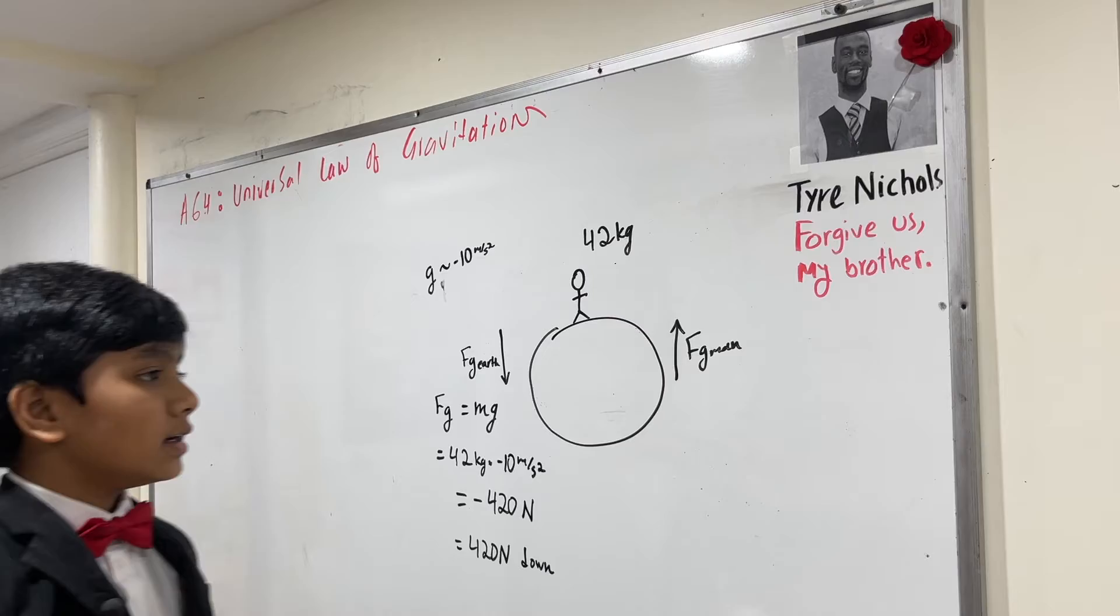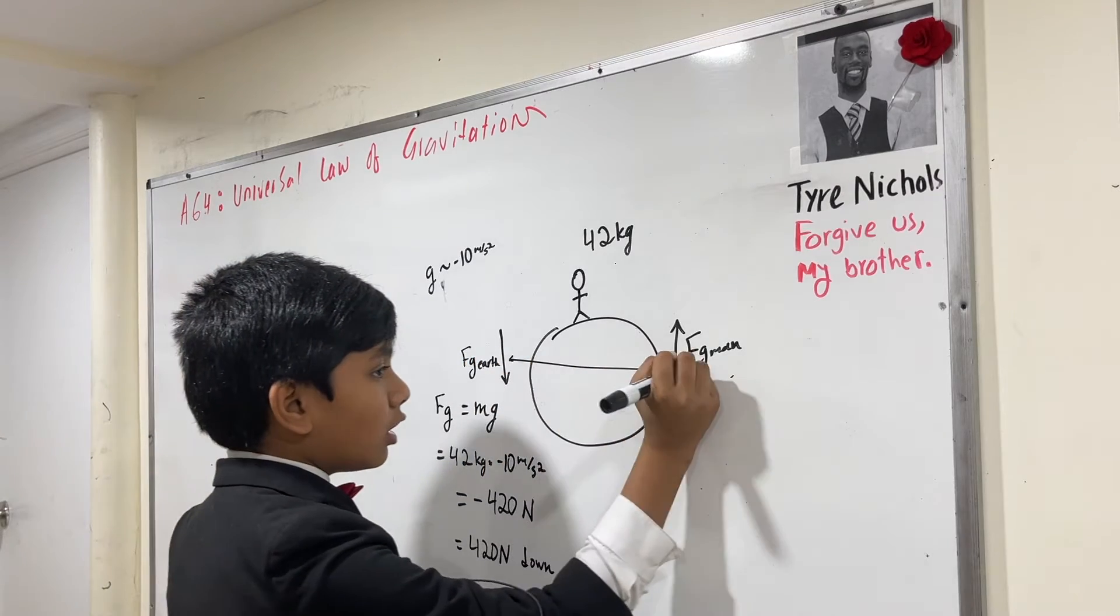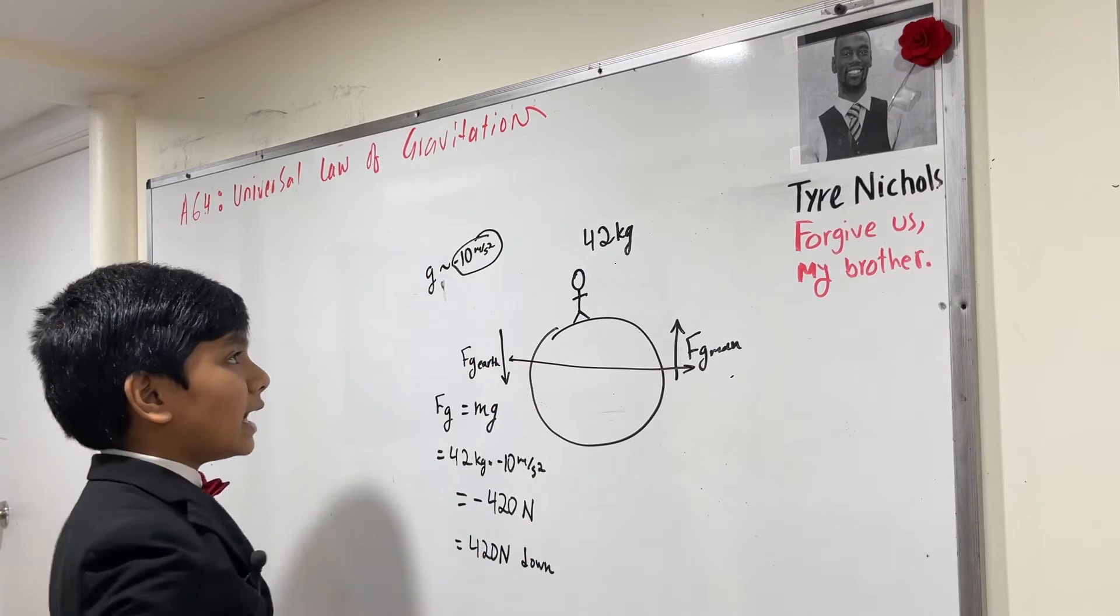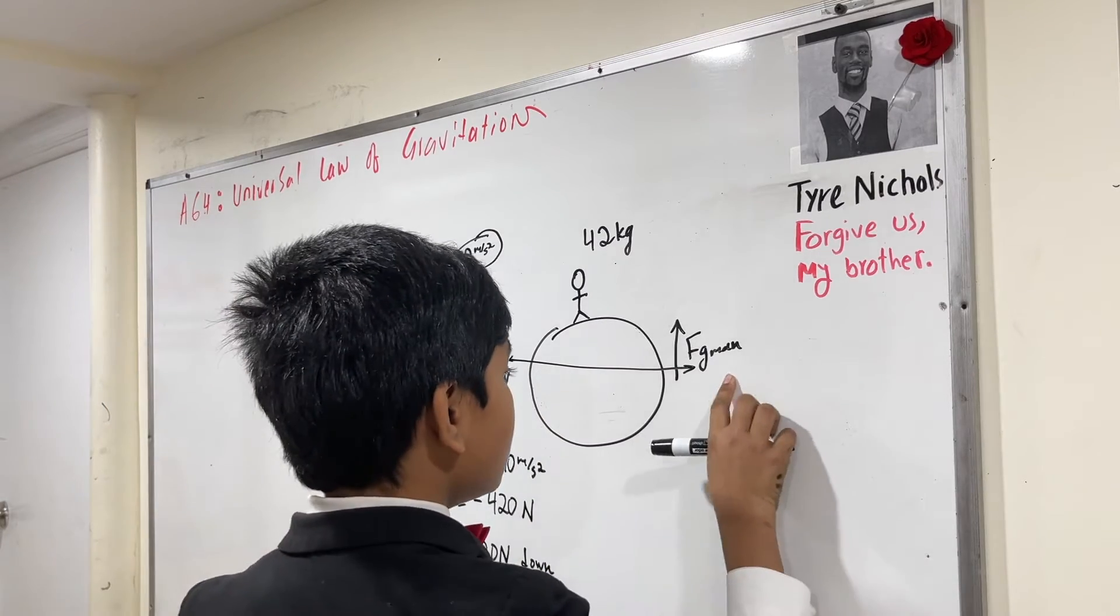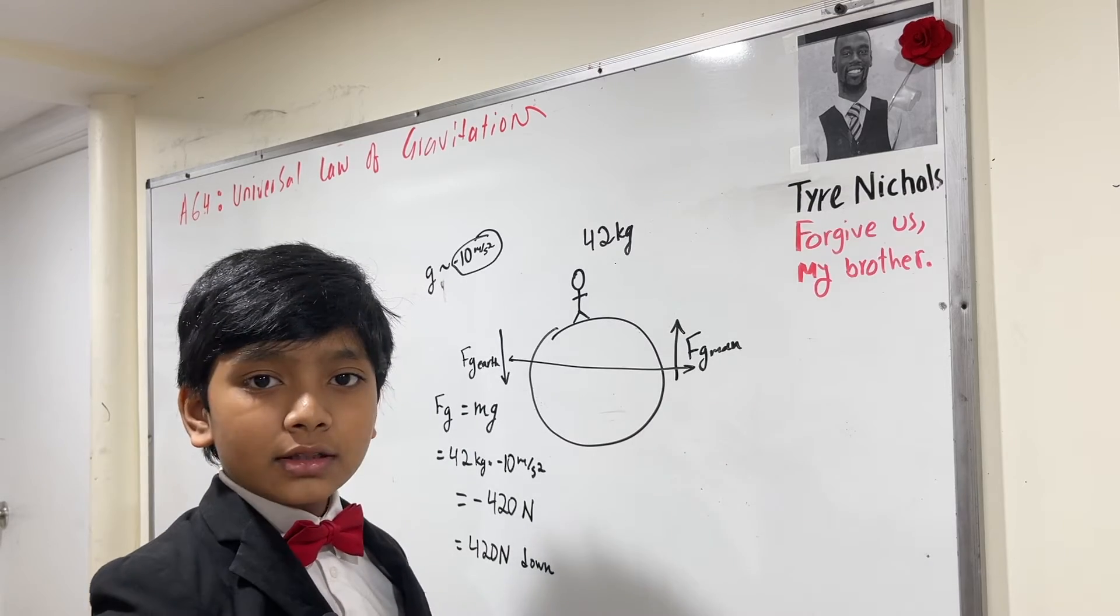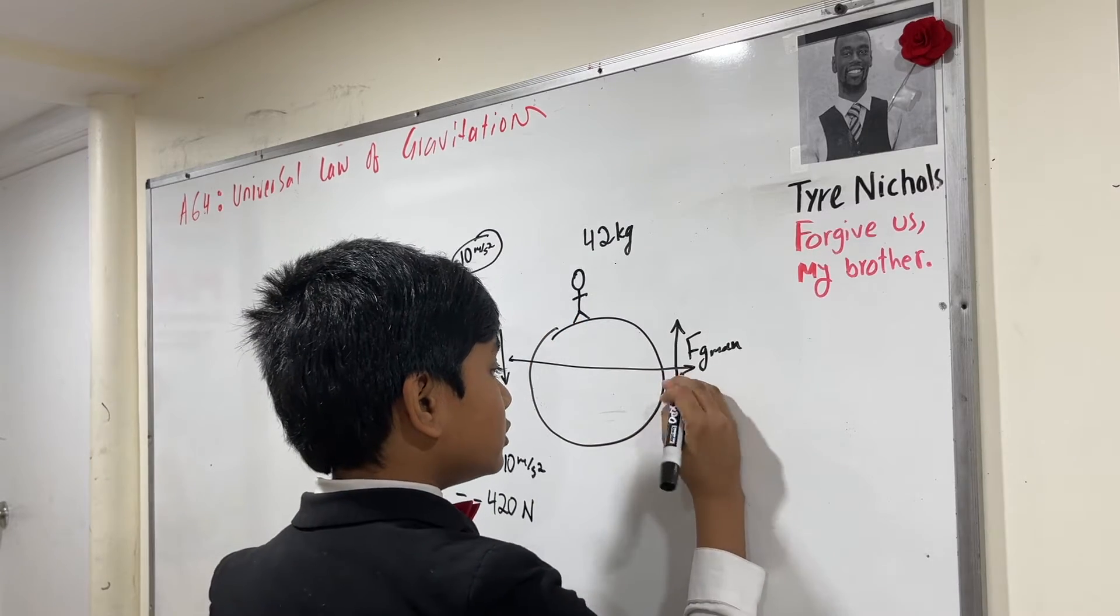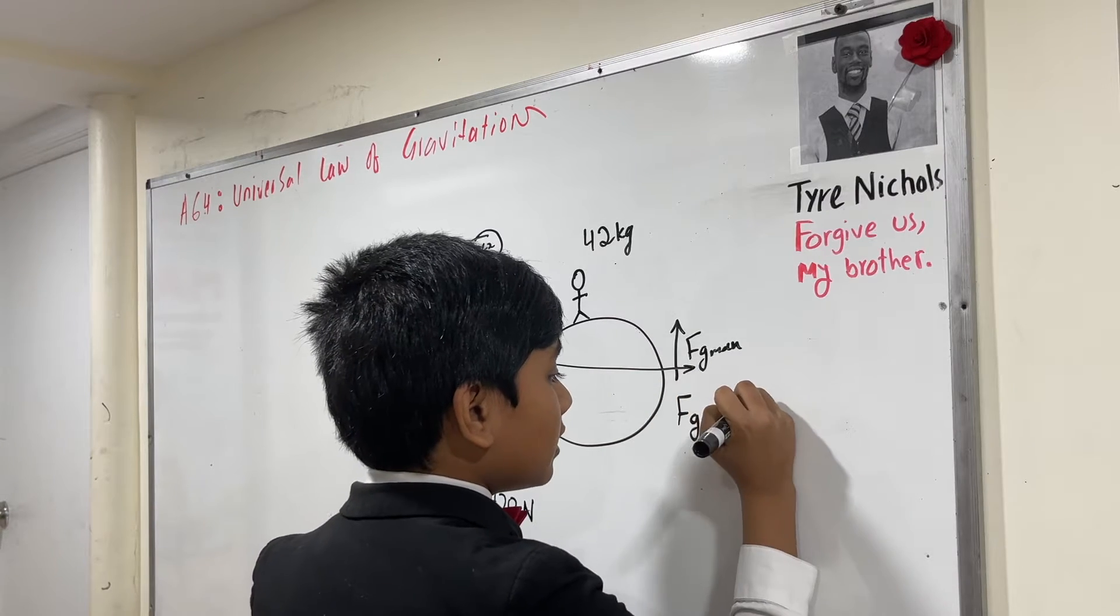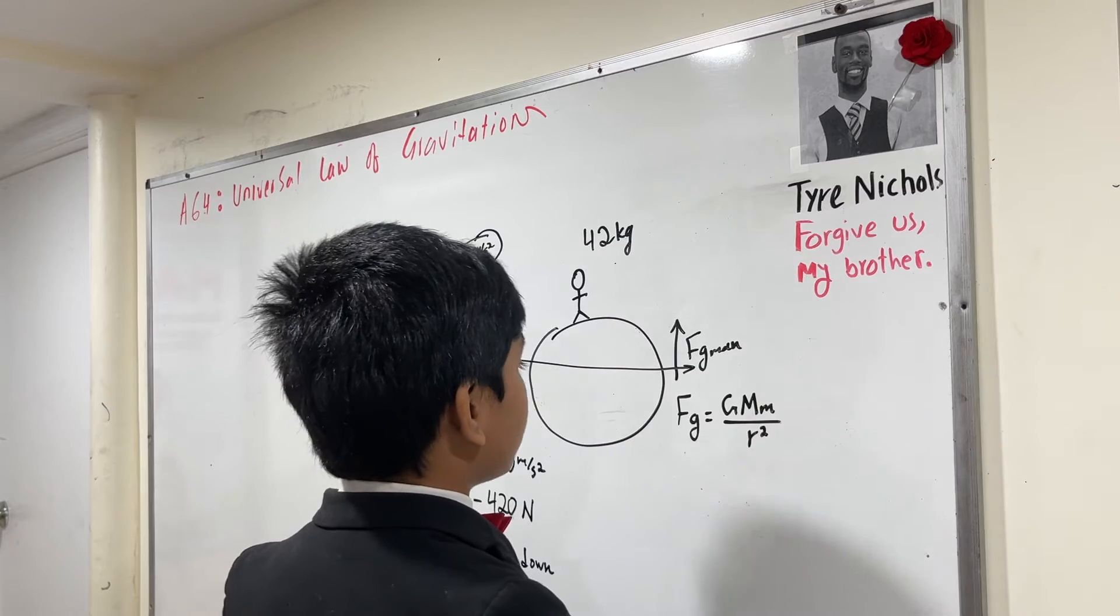So now let's try to find Fg man, and hopefully they will be exactly the same, although Fg man might be a little bigger considering that we use g equals minus 10 meters per second squared instead of minus 9.8 meters per second squared. So what is Fg exerted by the man? Well, in this case, we don't really know the gravitational acceleration of this man. But instead, we can use Newton's universal law of gravitation, which suggests Fg equals G times the bigger mass times the smaller mass over the distance between the center of the two squared.